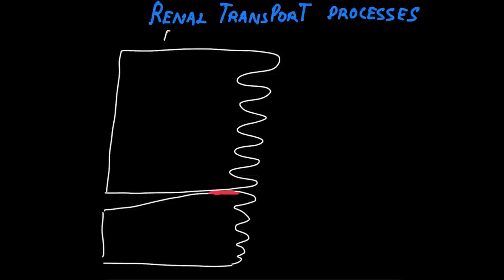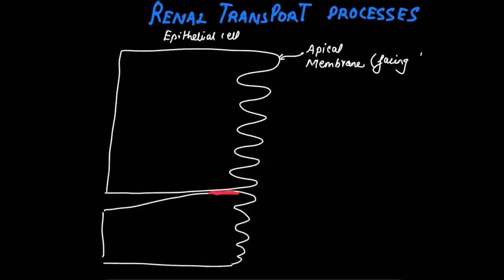The epithelial cell lining the renal tubule has two membranes: the apical membrane and the basolateral membrane. The apical membrane is the one facing the lumen, and the basolateral membrane is the one facing the blood. Tubular fluid flows along the apical membrane.